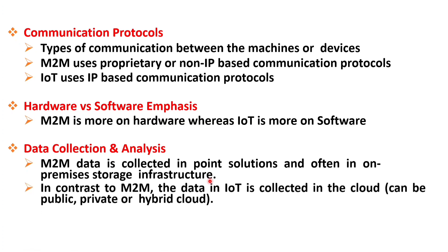On the other hand, in IoT systems, data collection is typically done in the cloud. IoT devices are connected to the internet and transmit the collected data to cloud-based platforms or services. The data is stored and processed in the cloud, allowing for centralized management and analysis. This cloud infrastructure used in IoT can be public, private, or a hybrid cloud, depending on the specific requirements of the IoT deployment.